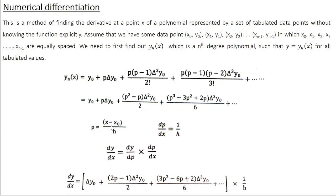Since p = (x − x₀)/h, dp/dx equals 1/h because x₀ is a constant and the derivative of x is 1. Our aim is to find dy/dx, and we can write dy/dx as (dy/dp)·(dp/dx). The dp terms cancel leaving dy/dx. We have dp/dx = 1/h, so now we need to calculate dy/dp.